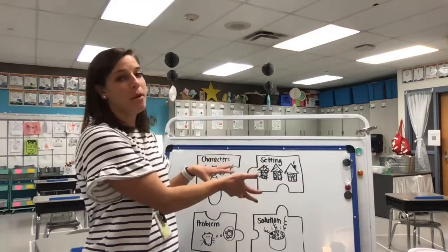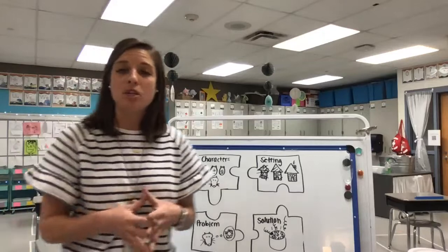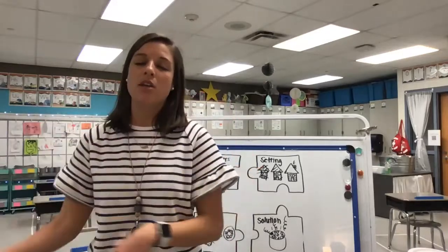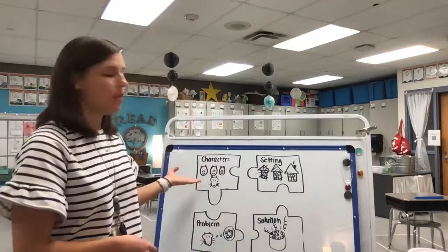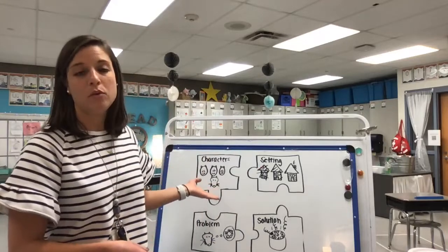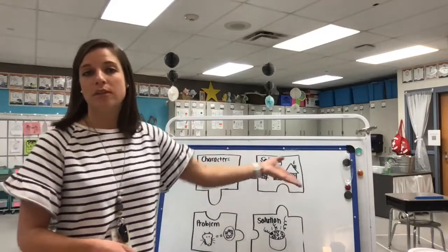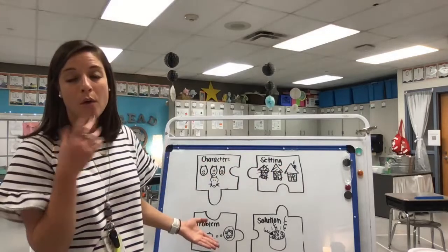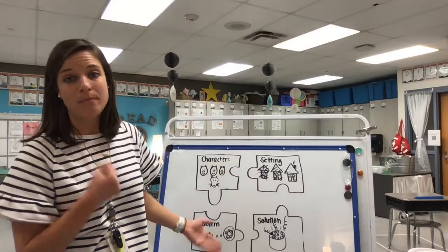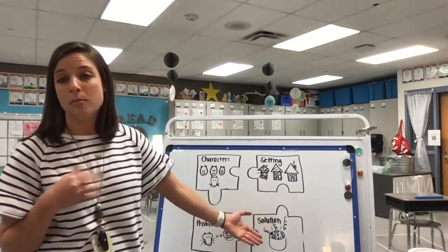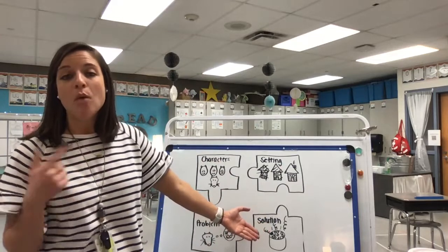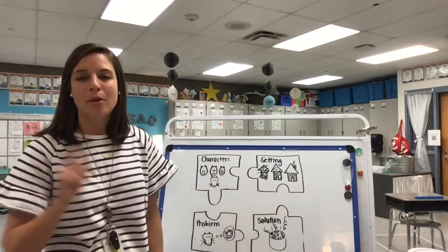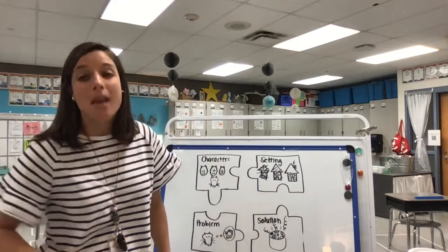That's why they're on different puzzle pieces up here. We did a picture walk yesterday of our big book, The Three Little Pigs, and talked about the characters — the three little pigs and the wolf — the setting, which are the different houses the pigs lived in, the problem — the wolf chasing the pigs and wanting to eat them — and the solution. The solution the pigs came up with was to put boiling water in a pot and have the wolf drop right in there and burn himself. And that's what happened.